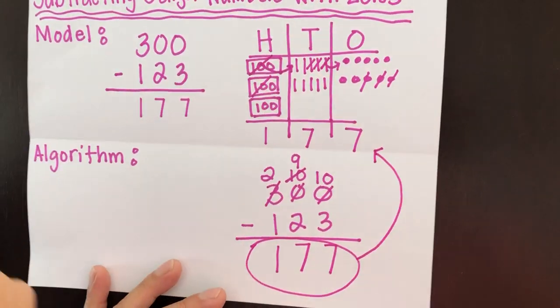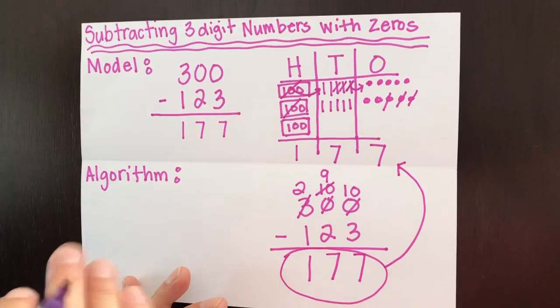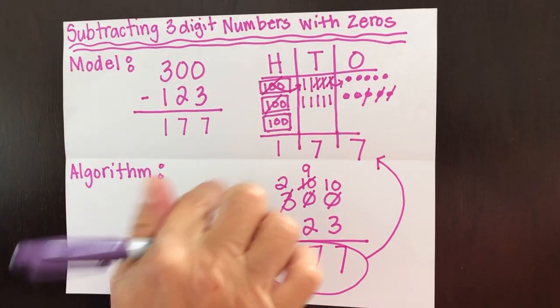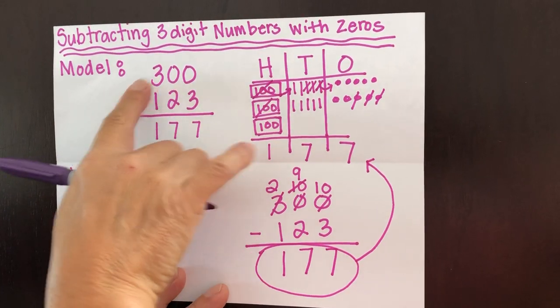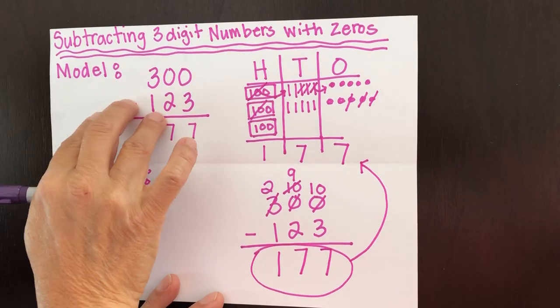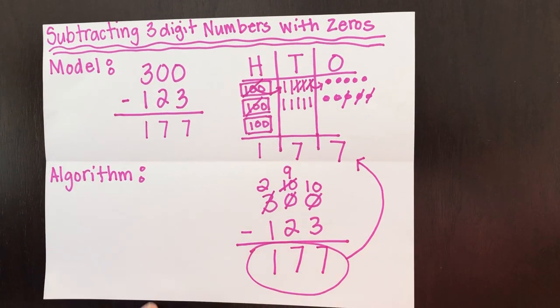The difference that we received here is the same difference that we got in the model. So it doesn't matter. You use whatever method you think is easier for you to subtract three-digit numbers that have zeros, either the model or the algorithm. Good luck.